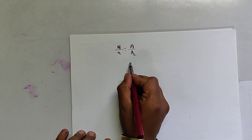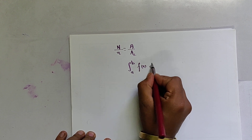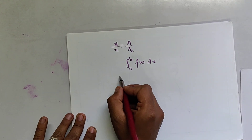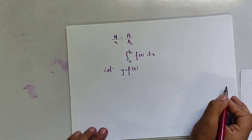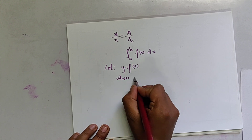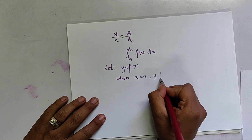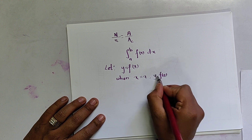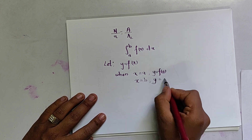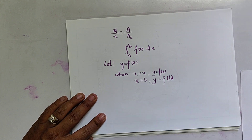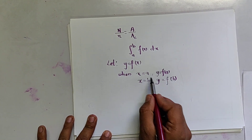Let us consider our integral as the integral from a to b of f(x) dx. We set y equals f(x). When x equals a, the lower limit, we calculate the lower limit of y as y equals f(a). When x equals b, we calculate the upper limit of y as y equals f(b).